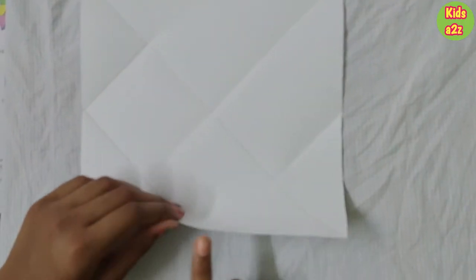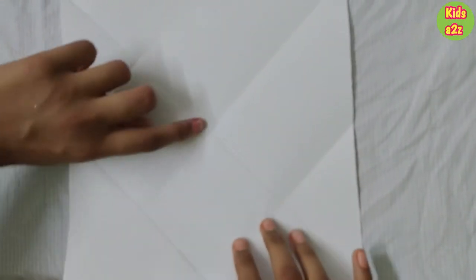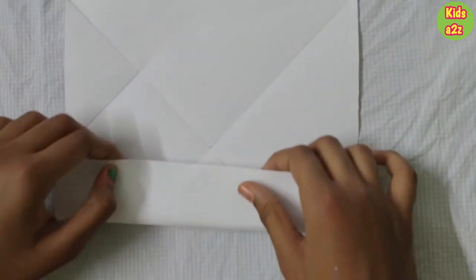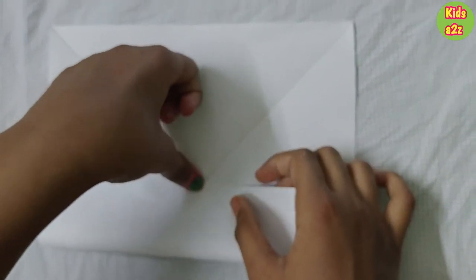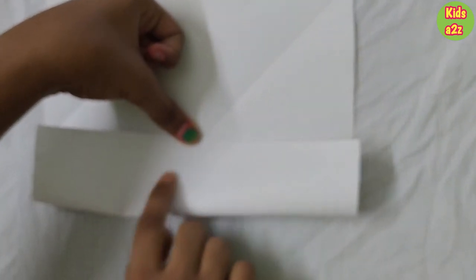Next we will take this edge and fold it to here. Fold it down and we will only fold about this triangle.